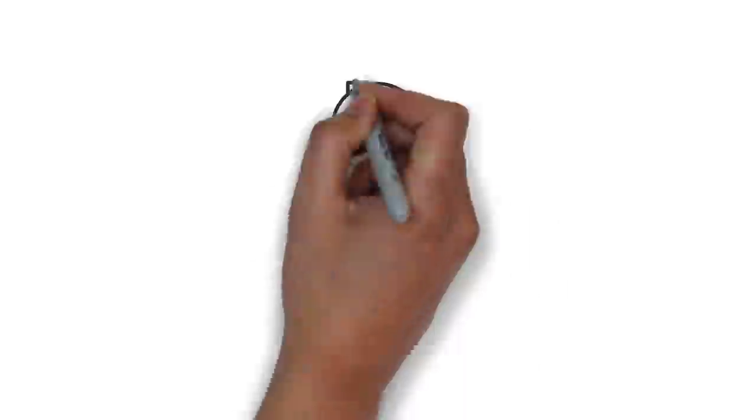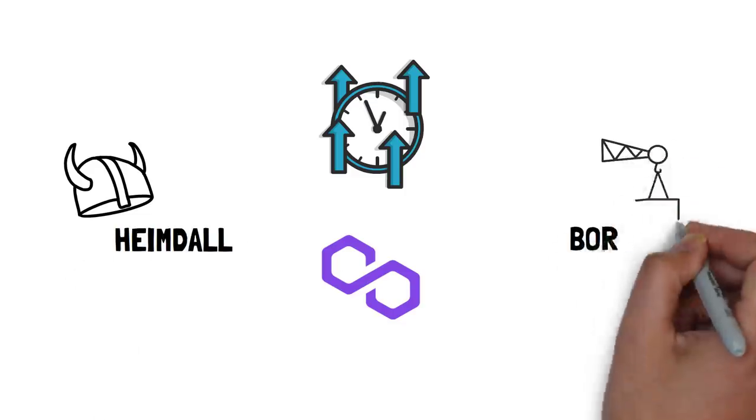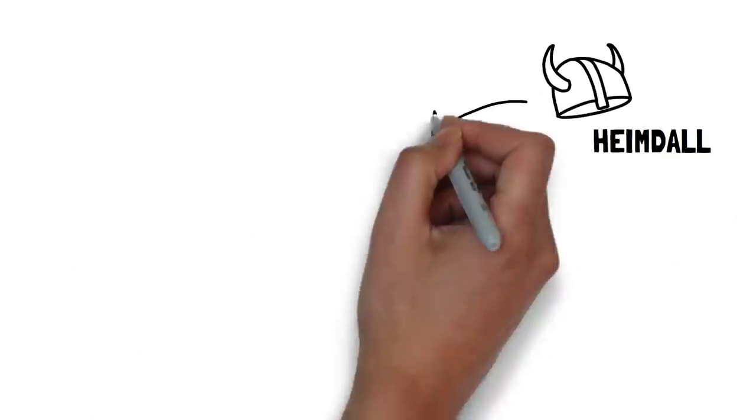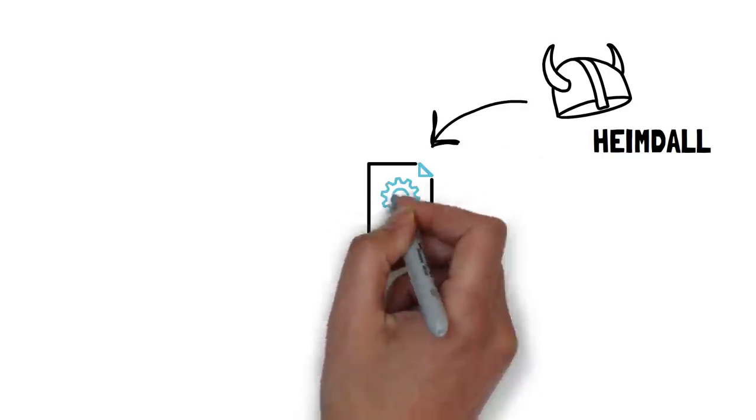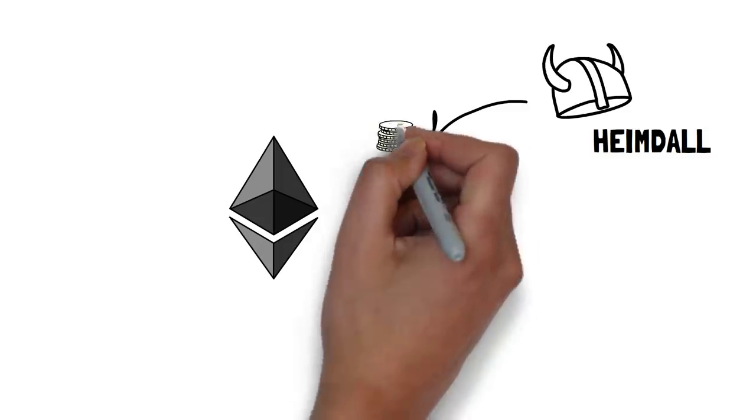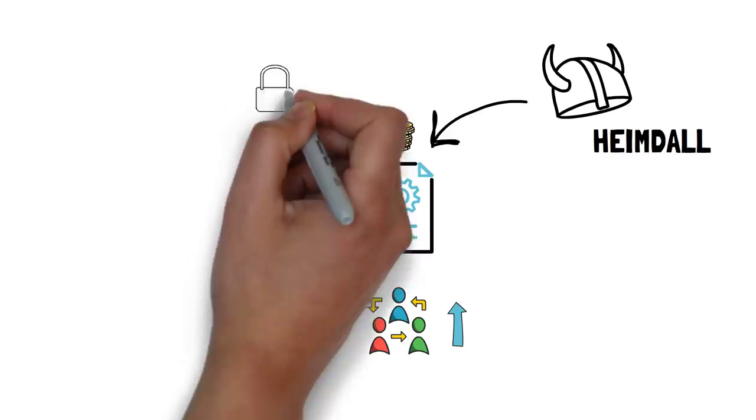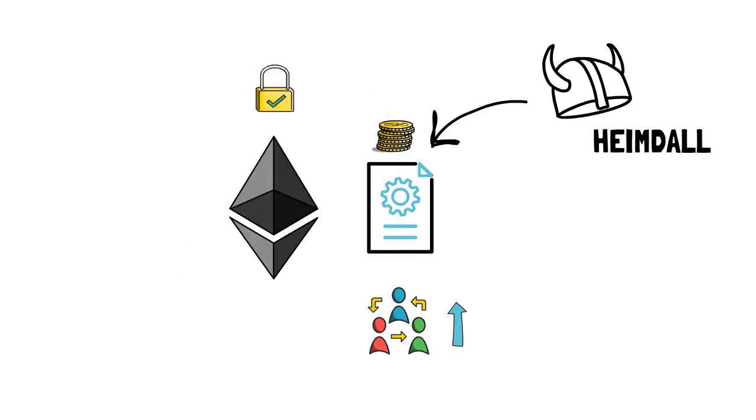This is also a good time to introduce two core components of the Polygon POS chain architecture – Heimdall chain and Bohr chain. Heimdall works in conjunction with the stake manager contract deployed on the Ethereum mainnet to coordinate validator selection and updating validators. Since staking is actually done on the Ethereum smart contract, we don't have to rely on validator honesty and instead inherit Ethereum chain security for this key part.